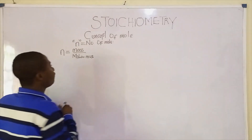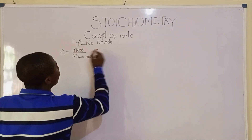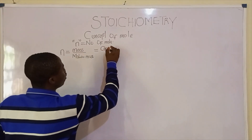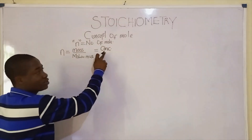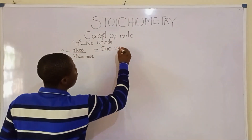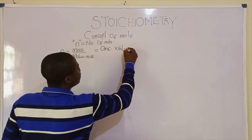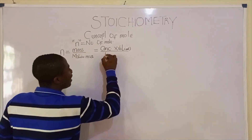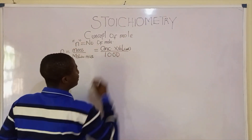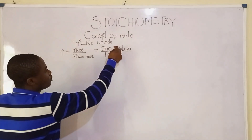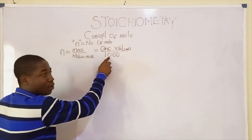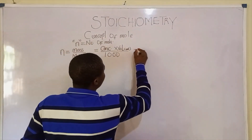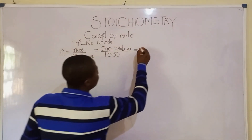The same number of moles is also given by the formula: concentration times volume. In this context the volume is in cm³, so we divide by one thousand — giving us concentration times volume over one thousand.